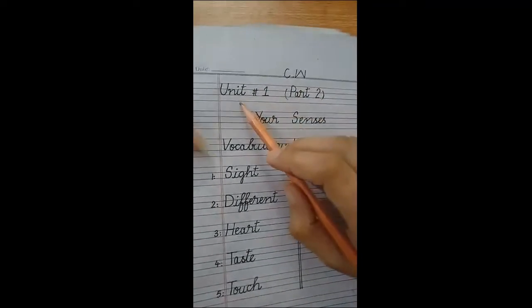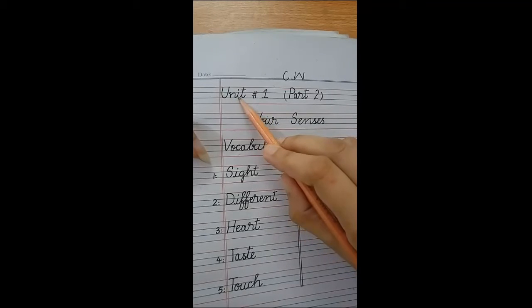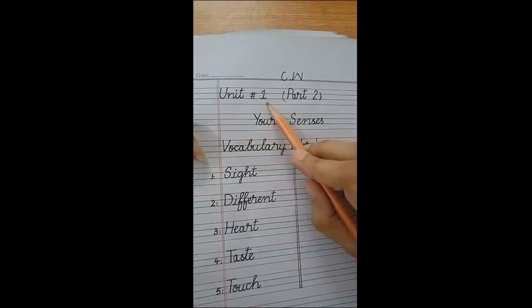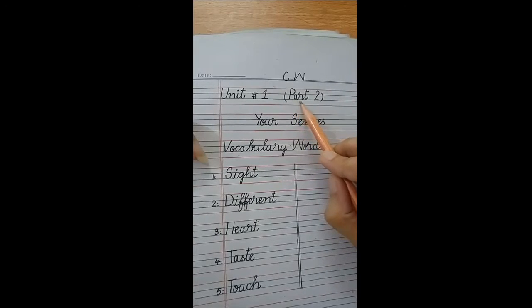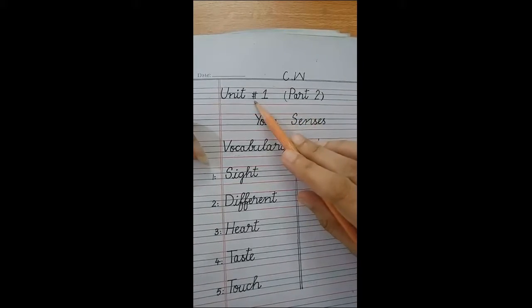On the first line, we will write unit number 1. Unit number 1. Okay, isi ke saamne humnye likhna hai part, part 2. Ye unit number 1 ka part 2 hai.